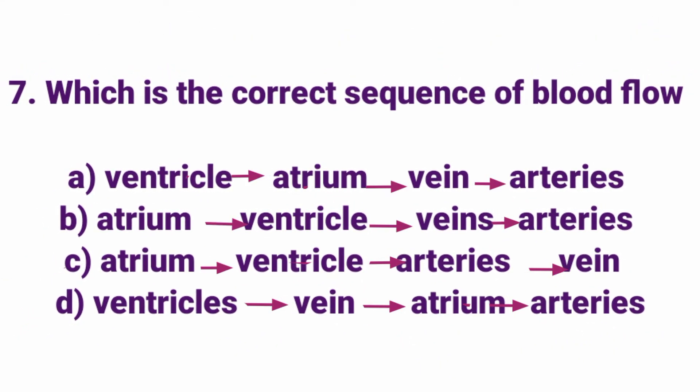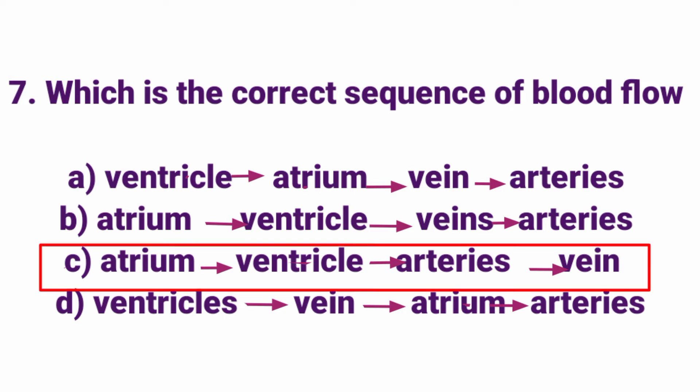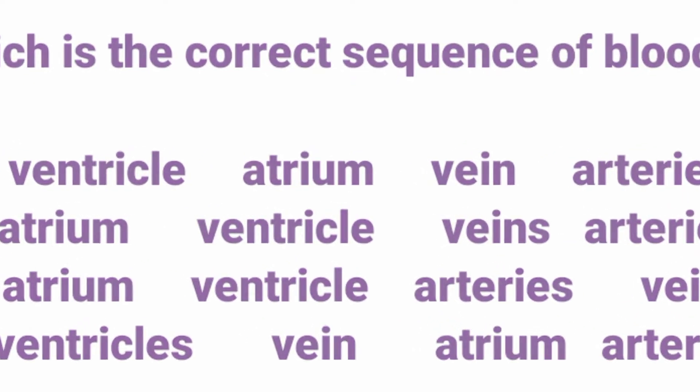Which is the correct sequence of blood flow? Answer: Option C — Atrium to ventricle, ventricle to arteries, then vein. The sequence is: Atrium, ventricle, arteries, vein. Answer: Option C.